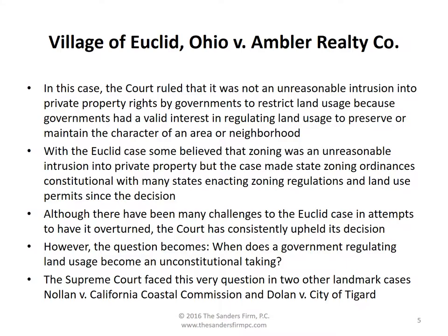In Village of Euclid, Ohio v. Ambler Realty Company, the court ruled that it was not an unreasonable intrusion into private property rights by governments to restrict land uses, because governments had a valid interest in regulating land uses to preserve or maintain the character of an area or neighborhood. With the Euclid case, some believed that zoning was an unreasonable intrusion into private property, but the case made state zoning ordinances constitutional, with many states enacting zoning regulations and land use permits since the decision.